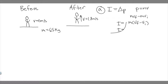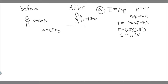So to find the impulse, we just do M times (V-final minus V-initial). The mass is 65 kilograms. V-final is 1.8 meters per second, and V-initial is 0, so it's really just 65 times 1.8. If you plug this in, you get the impulse is equal to 117, and the units are newton seconds. So 117 newton seconds — that's your answer to A.